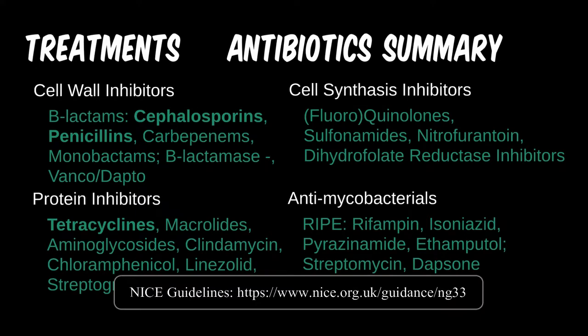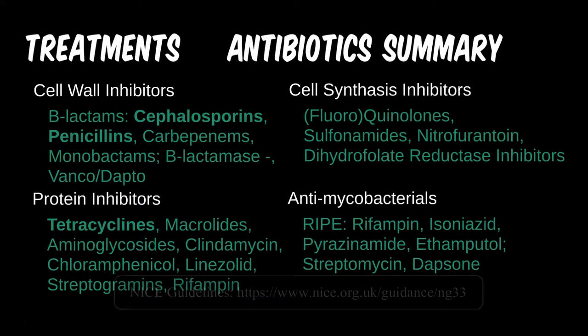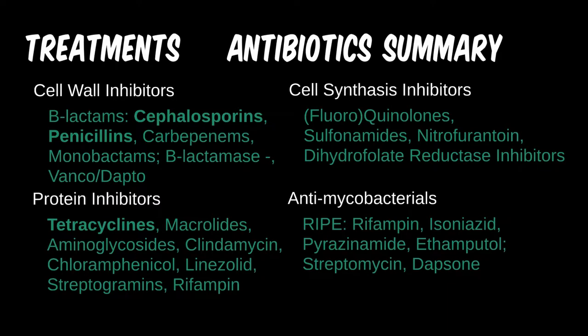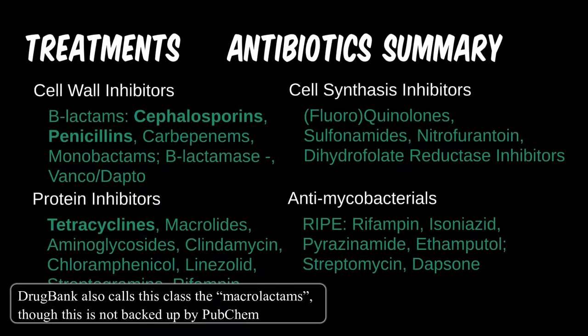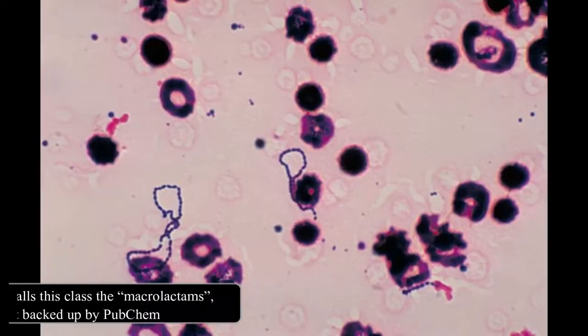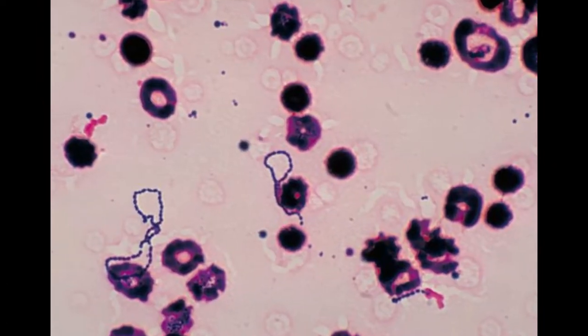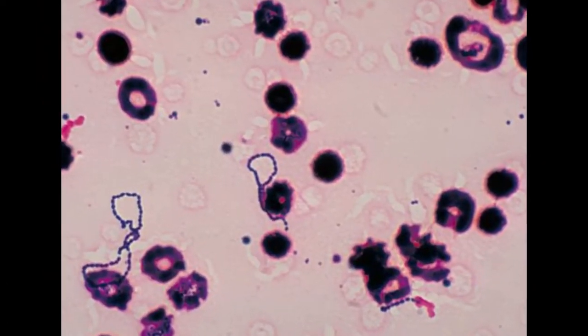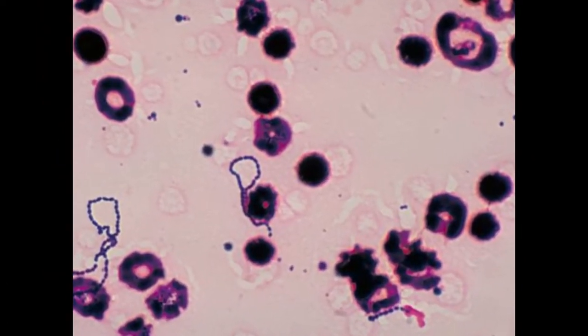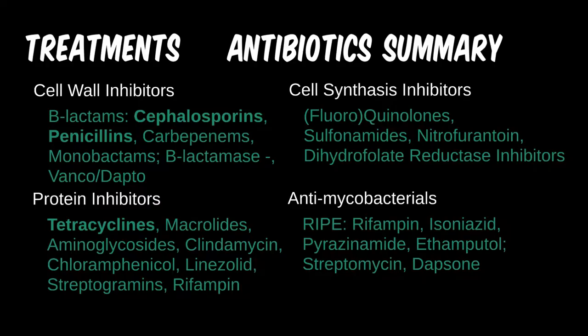Rifampin specifically inhibits the beta subunit of RNA polymerase, preventing the creation of RNA. Since the bacteria can no longer make new materials, it stalls out. The rifamycins are derived from a species of Streptococcus — remember those bacteriocins discussed in previous modules.